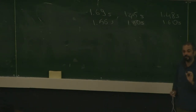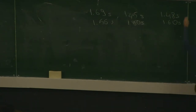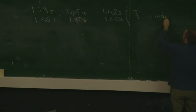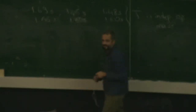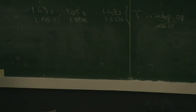So that is one conclusion from these two measurements that we can derive. If we have such a system, the period of oscillation T is independent of mass. As the mass changes, the period of the oscillation doesn't change.